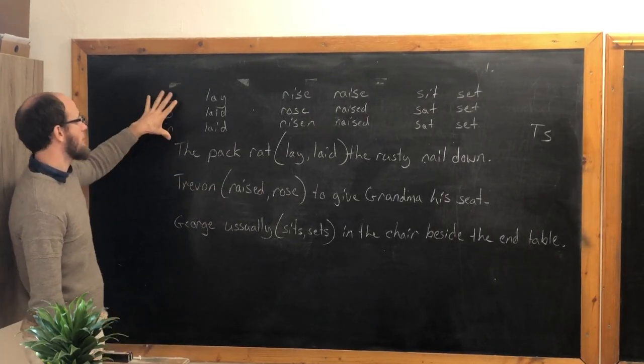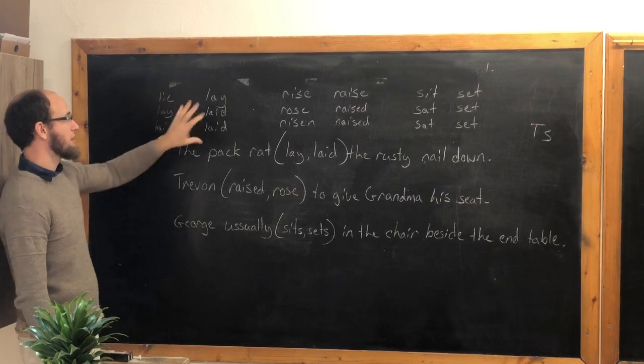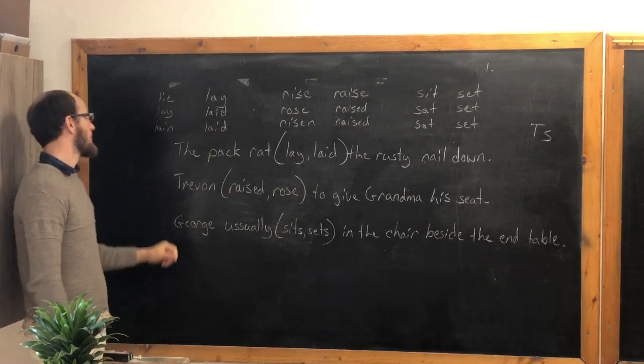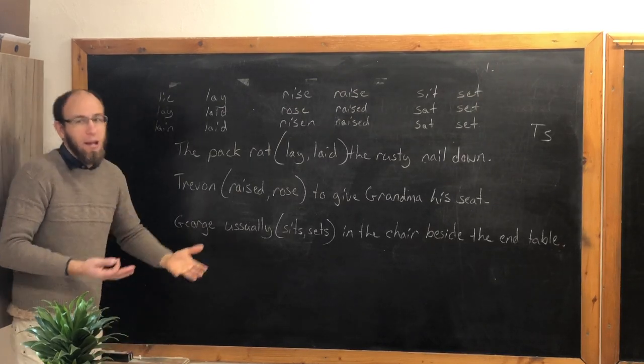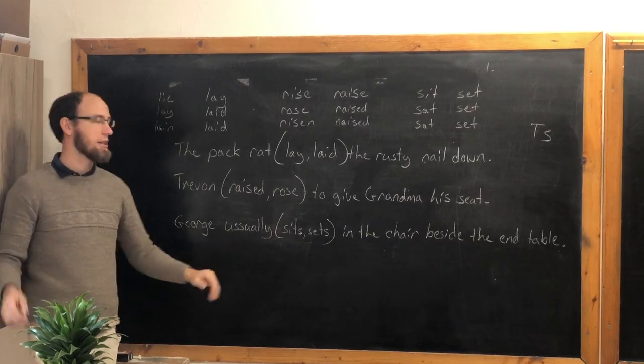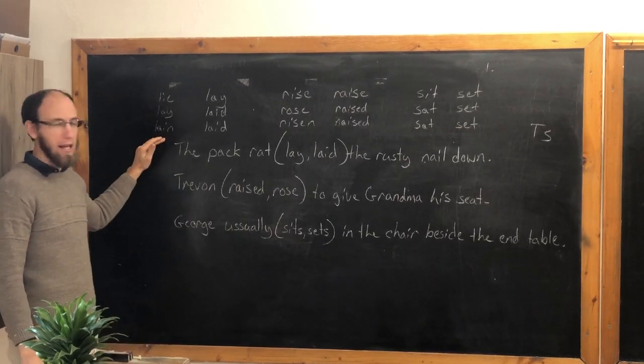Because the first one is always something that you do, and the second word is always something that you do to something else. Lie: today I lie on the couch. I'm just doing it. Yesterday I lay on the couch. He just did it. And many days he has lain.